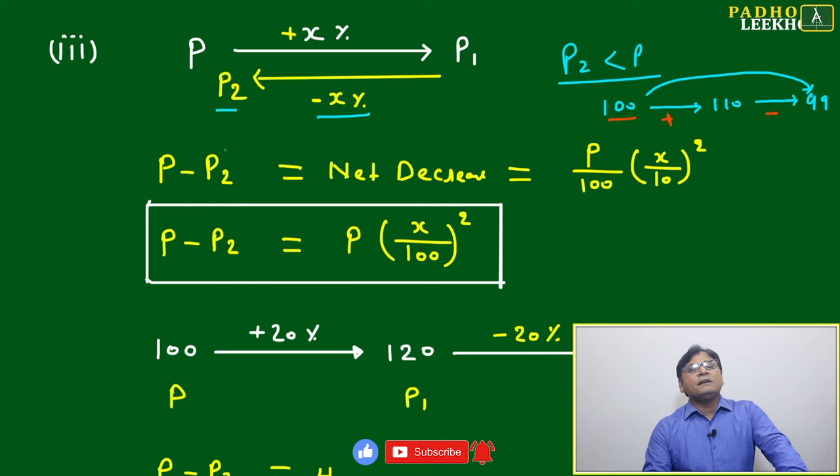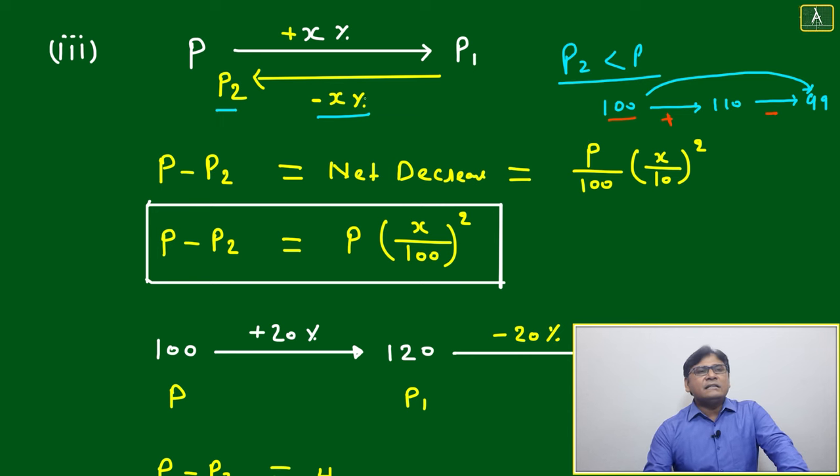Okay, then P minus P2, it will be net decrease and net decrease will be equal to P by 100 into x by 10 square. This type of operation may be sometimes it will be given.